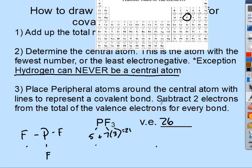Subtract two electrons from the total number of valence electrons for every bond — those lines you drew. So that's two, four, six subtracted, leaving twenty valence electrons remaining.